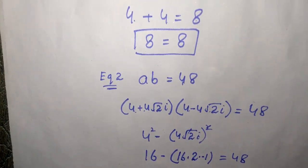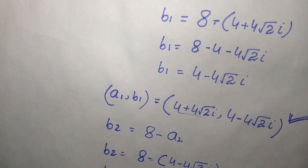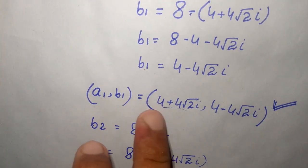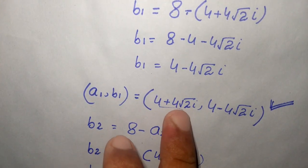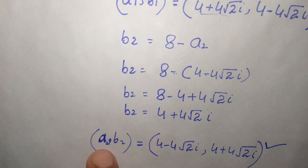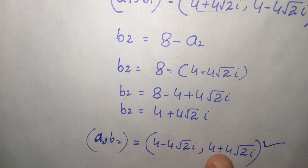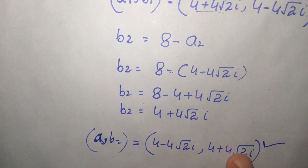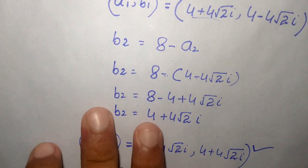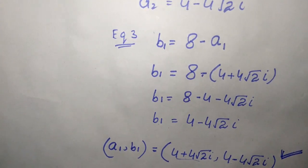So we have two solutions for a and b. The first solution is a1 b1 equals (4 plus 4 square root of 2 i) and (4 minus 4 square root of 2 i). The second solution is a2 b2 equals (4 minus 4 square root of 2 i) and (4 plus 4 square root of 2 i). This is our answer. Thank you for watching. Please subscribe to the channel.